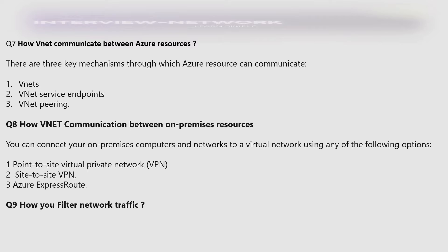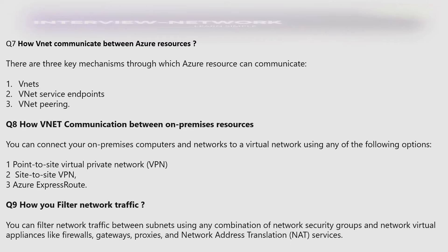How do you filter network traffic? You can filter network traffic between subnets using any combination of network security groups and network virtual appliances like firewalls, gateways, proxies, and network address translation services.